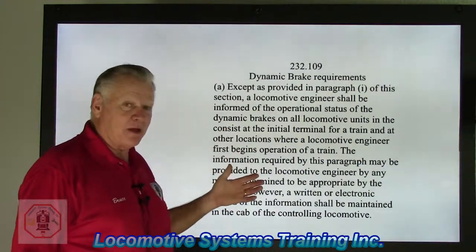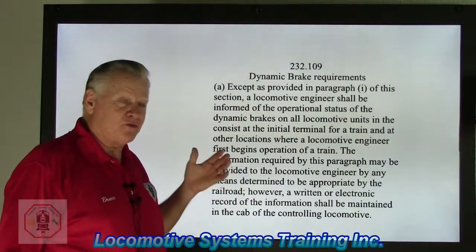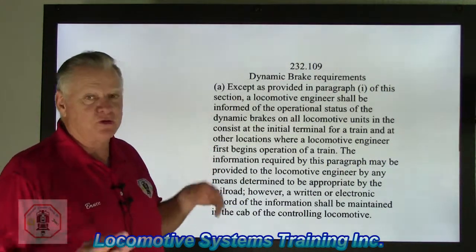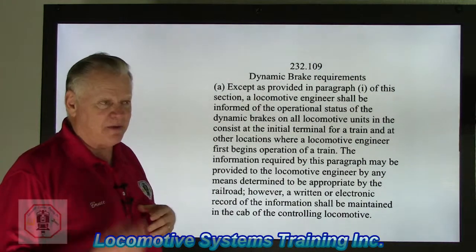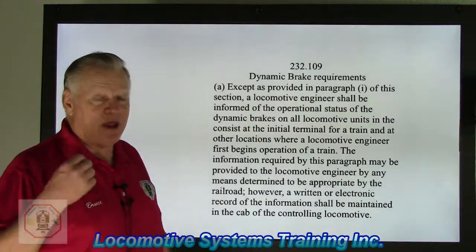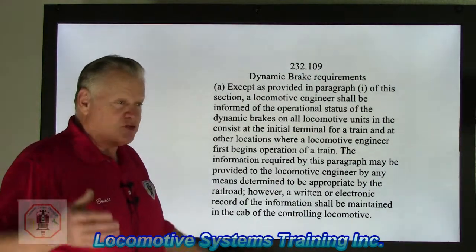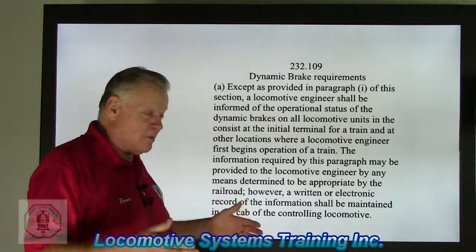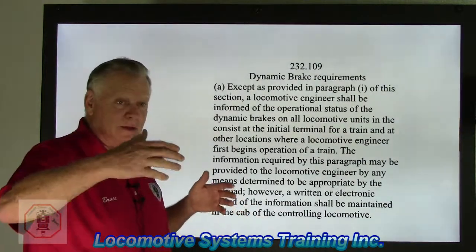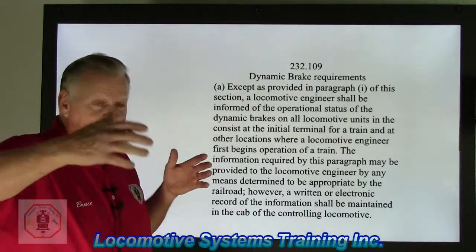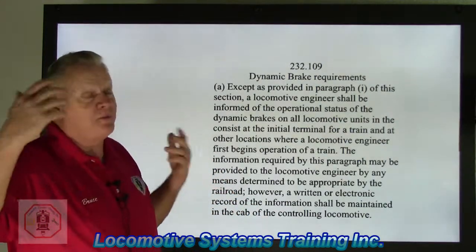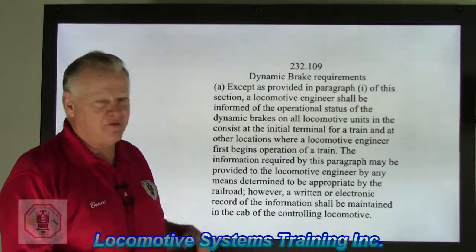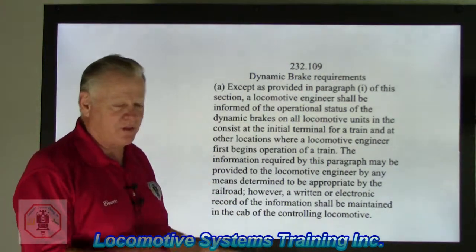In dynamic braking, through the use of electronics, there are two types: dynamic braking and extended range dynamic braking. It can run almost a full gamut of speed from zero miles an hour up to probably 50 or 60 miles an hour. I'd have to depend on my electrician friends for the exact figures — I'm strictly mechanical.